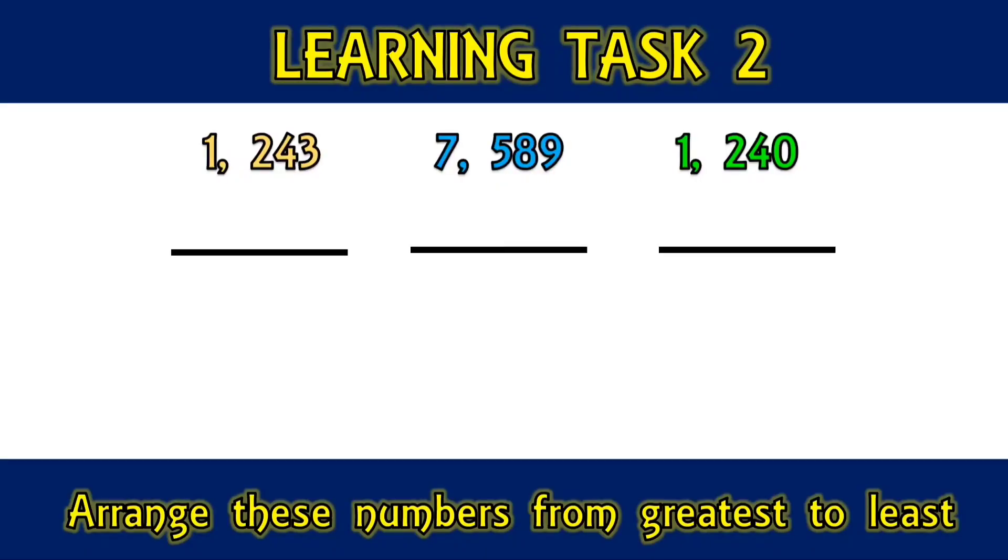Arrange these numbers from greatest to least: 1,243, 7,589, and 1,240. 7,589 is the greatest number and 1,240 is the least number.